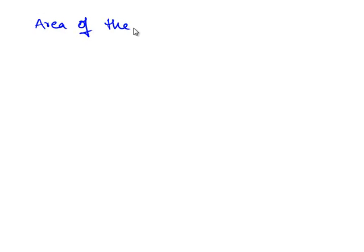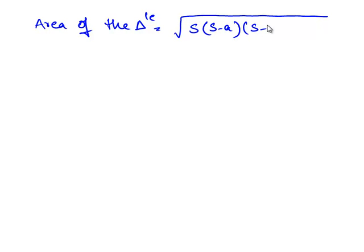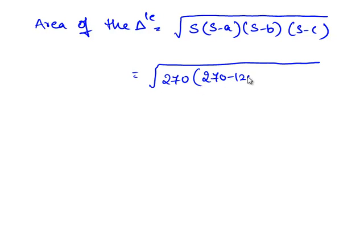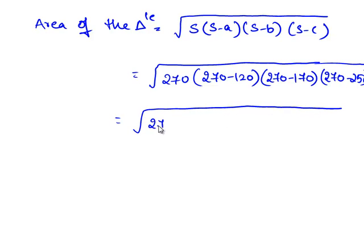Now let us substitute the value of S and the sides of the triangle in the formula. Area of the triangle is equal to the square root of S times (S minus A) times (S minus B) times (S minus C), which is equal to the square root of 270 times (270 minus 120) times (270 minus 170) times (270 minus 250), which is equal to the square root of 270 times 150 times 100 times 20.